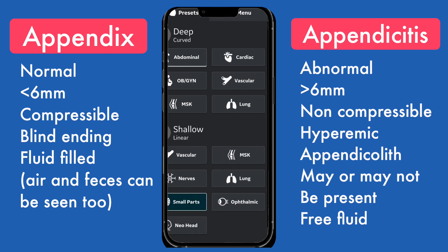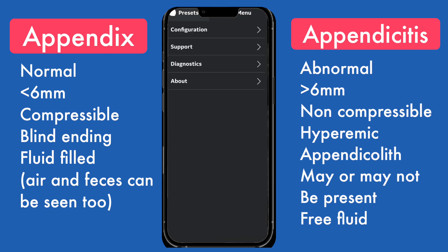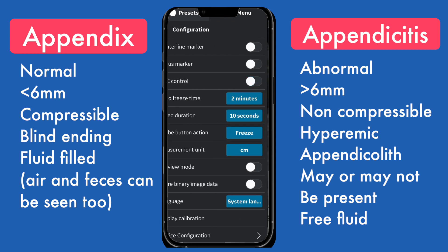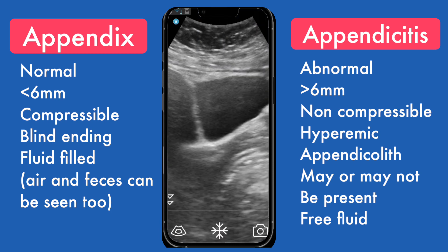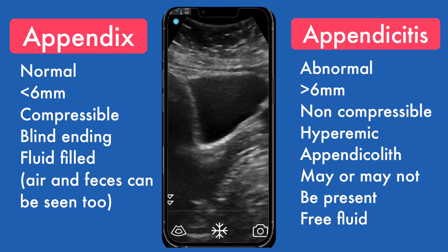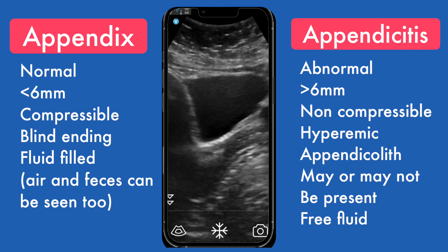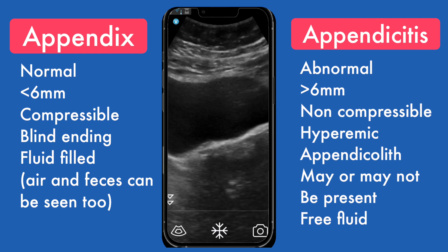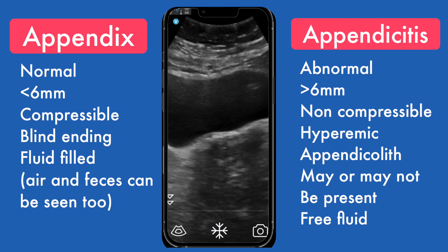After I'm done with that, I go and start taking images of the bladder. The order you do this in doesn't really matter — some people begin in the bladder, some people begin in the right upper quadrant. I take a few sagittal images of the bladder, a few transverse images, and look for free fluid in the pelvis. And that's pretty much it.